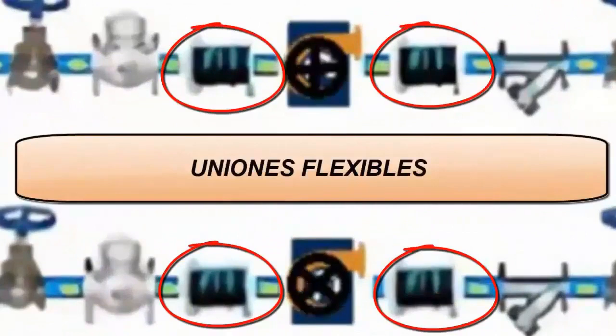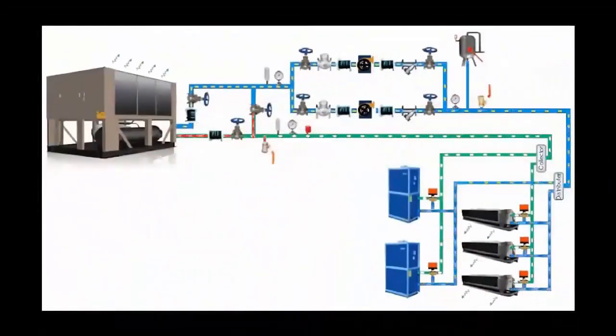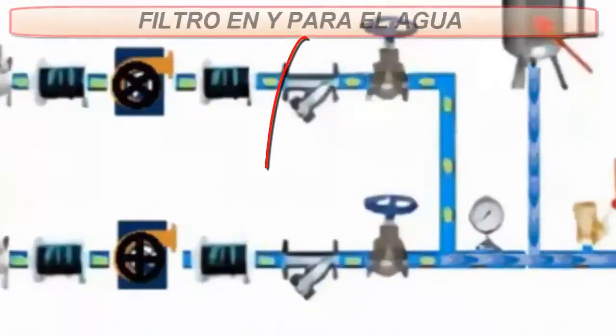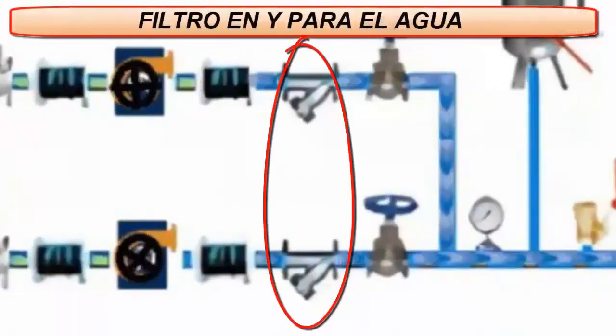5. Flexible joints are used to absorb vibrations and prevent damage to the pipeline.